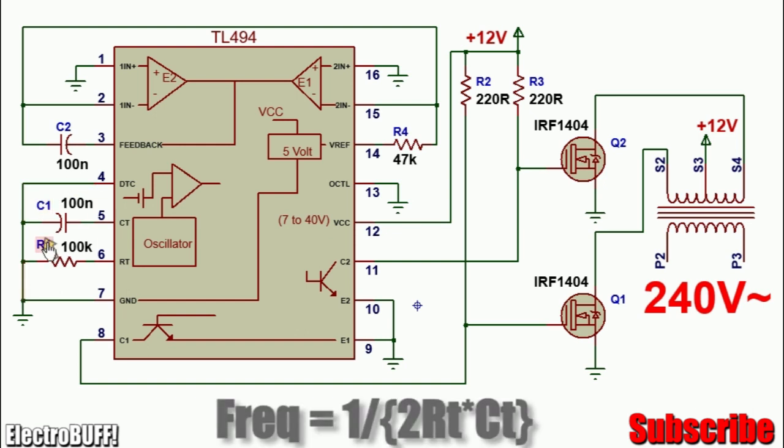The frequency of oscillation is determined by the timing capacitor C1 and resistor R1. Use 100 nF for C1 and 100 kOhms for R1 to give you an output frequency of 50 Hz. The formula is 1 over 2 times C1 times R1. You can adjust the components of either C1 or R1 to get any frequency you want, but usually the frequency should remain between 50 and 60 Hz for many appliances.